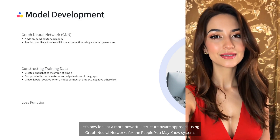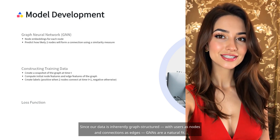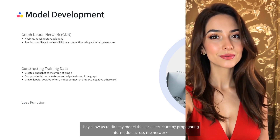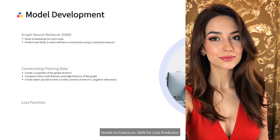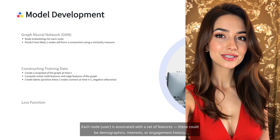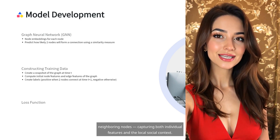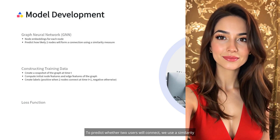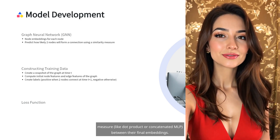Let's now look at a more powerful, structure-aware approach using graph neural networks (GNNs) for the people-you-may-know system. Since our data is inherently graph-structured — with users as nodes and connections as edges — GNNs are a natural fit. They allow us to directly model the social structure by propagating information across the network. Each node (user) is associated with a set of features such as demographics, interests, or engagement history. The GNN learns node embeddings by aggregating information from neighboring nodes, capturing both individual features and the local social context. To predict whether two users will connect, we use a similarity measure like dot product or concatenated MLP between their final embeddings.